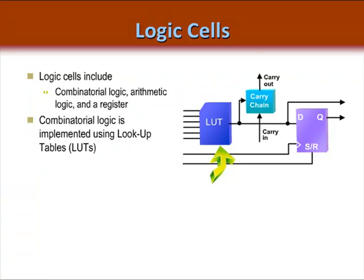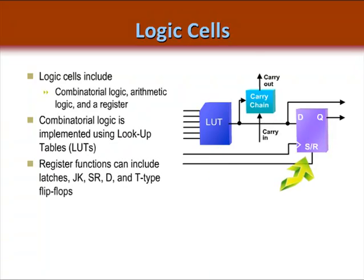The flip-flop can be programmed as a latch, although that is not recommended, or as a JK, SR, D, or T-type flip-flop. The actual flop in the silicon is a D-type. Extra gates are used to convert it to the desired type if you choose something other than a D-type flop, and these gates are simply merged into the associated lookup tables.